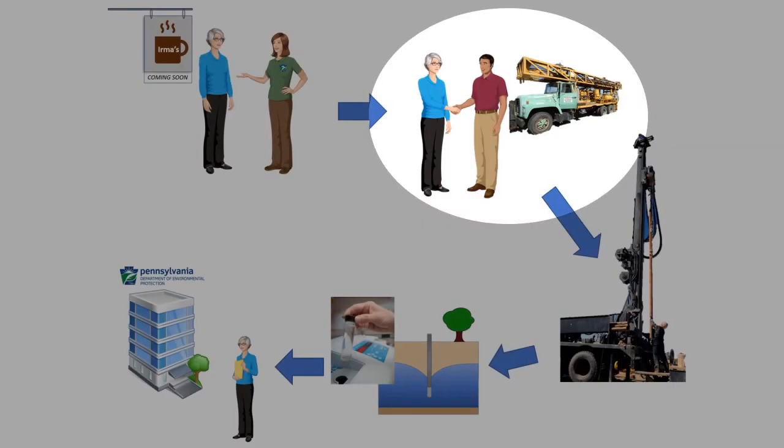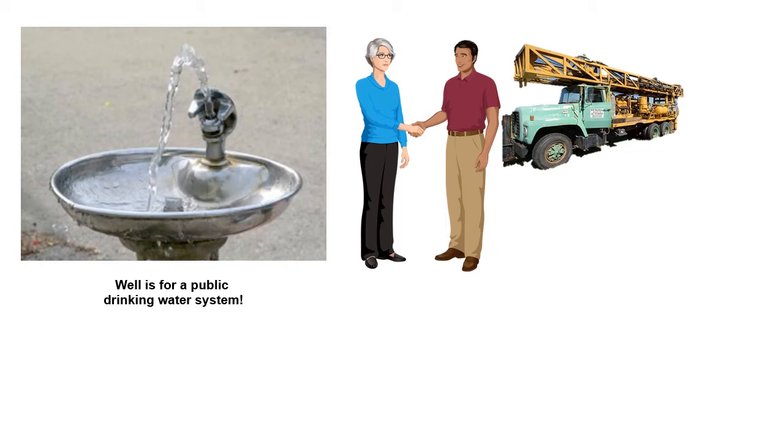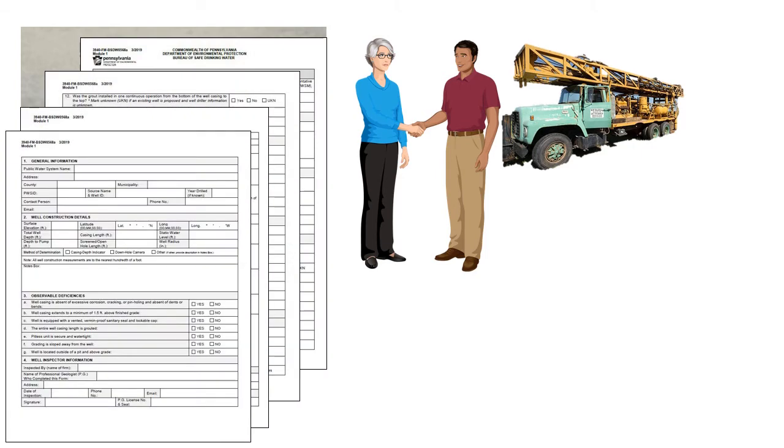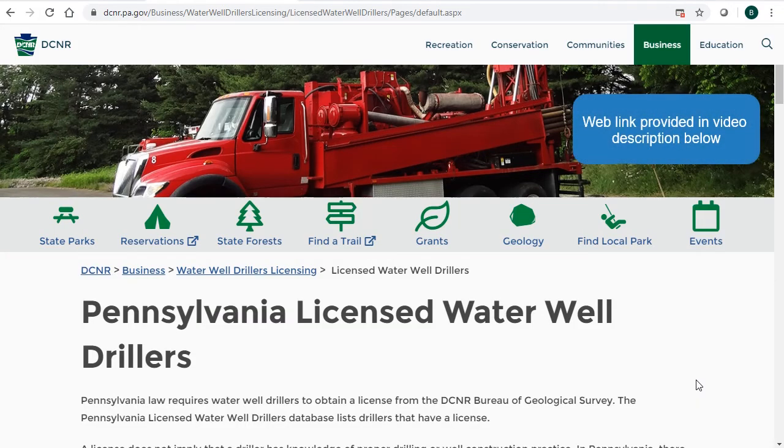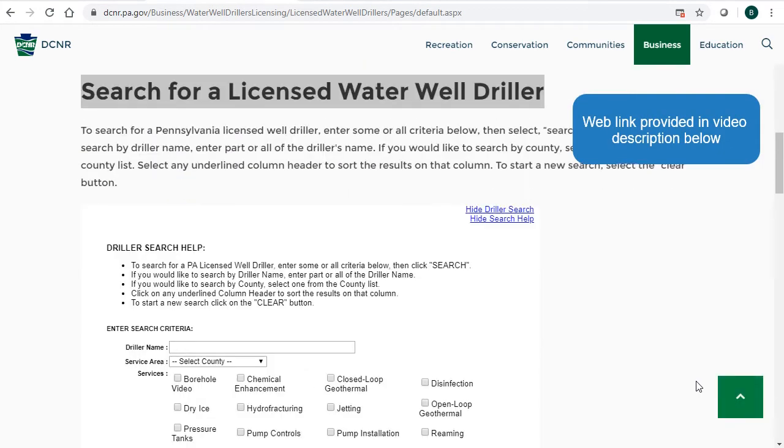The second step is for the applicant to secure a Pennsylvania-licensed well driller. The applicant should notify all potential drillers that their project is for a public water supply source and that DEP forms regarding well drilling activities are required. The Pennsylvania Geological Survey maintains a searchable database of licensed water well drillers, including contact information organized by county. The database is also sortable according to the services offered by the licensed well driller.